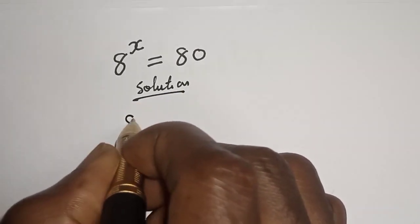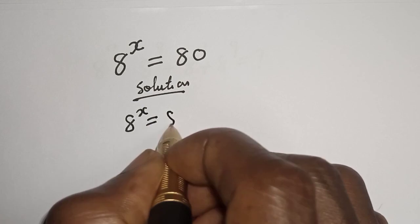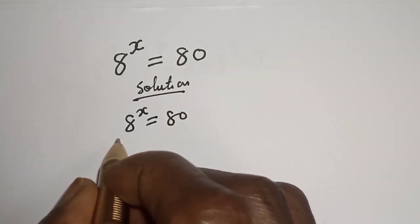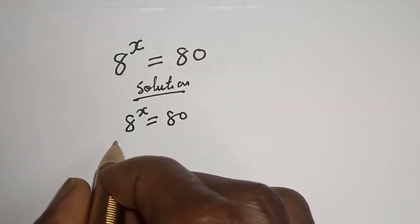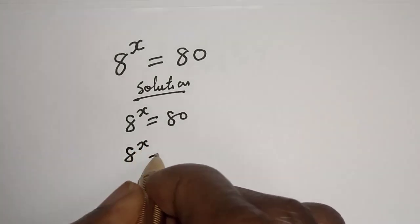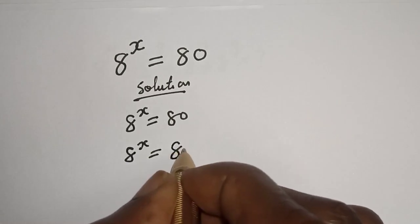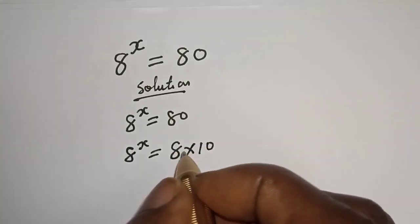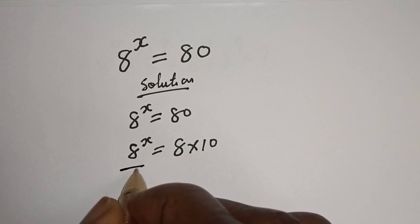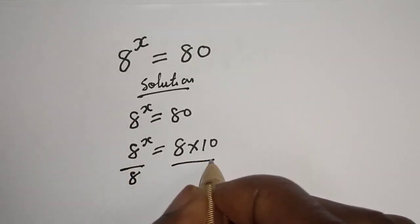We have 8 raised to power s is equal to 80. Then 8 raised to power s is equal to 80, which can be written as 8 multiplied by 10. Let's divide both sides by 8.